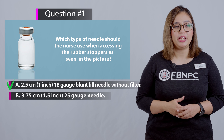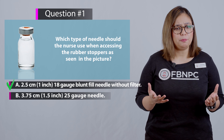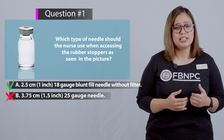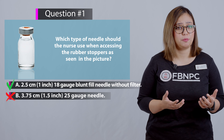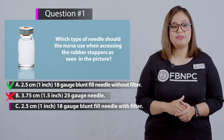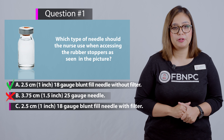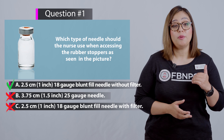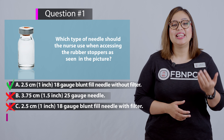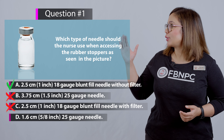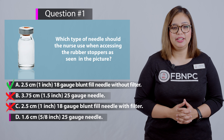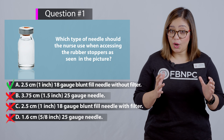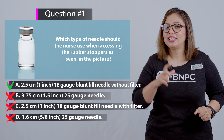Option B — a 3.75 cm (1.5 inch), 25-gauge needle — is incorrect because this type of needle is used for injections, not for drawing medication from a vial. Option C — a 2.5 cm (1 inch), 18-gauge blunt fill needle with filter — is used for drawing up fluids from glass ampules, not vials. Option D — a 1.6 cm (5/8 inch), 25-gauge needle — is used for subcutaneous injections, not for drawing medications from a vial.